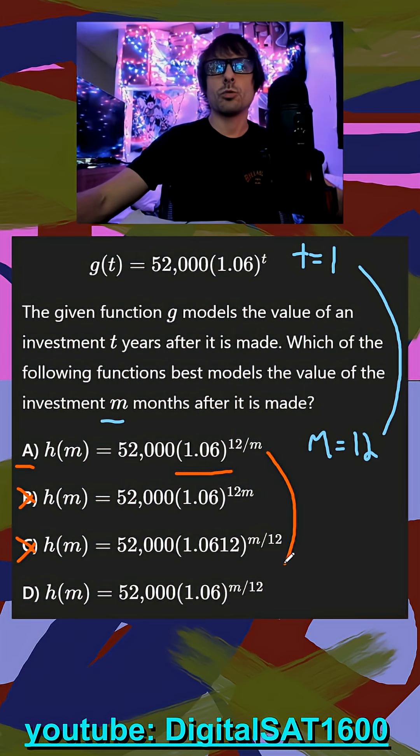So this is a rare one. We're going to just have to test maybe another easy number, like when t is equal to 2. We're going to get 1.06 squared, which should be when m is equal to 24.